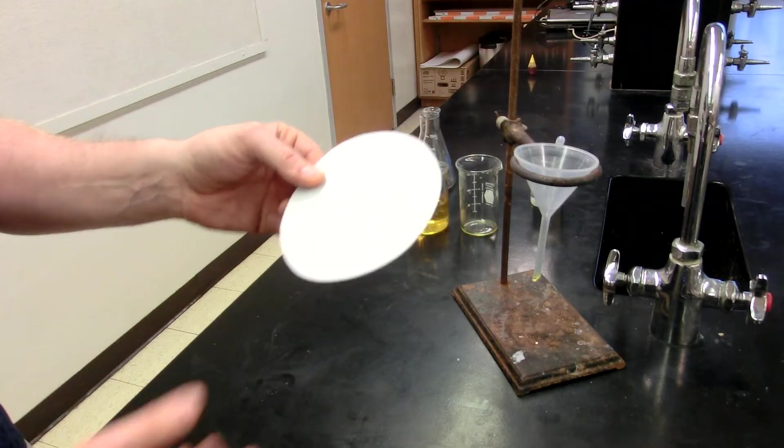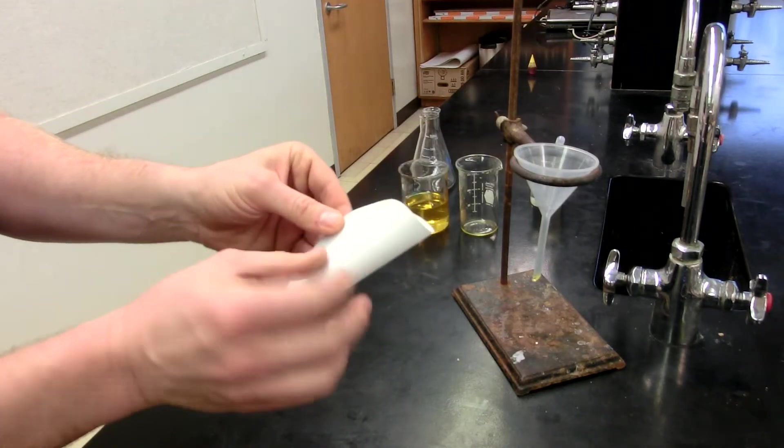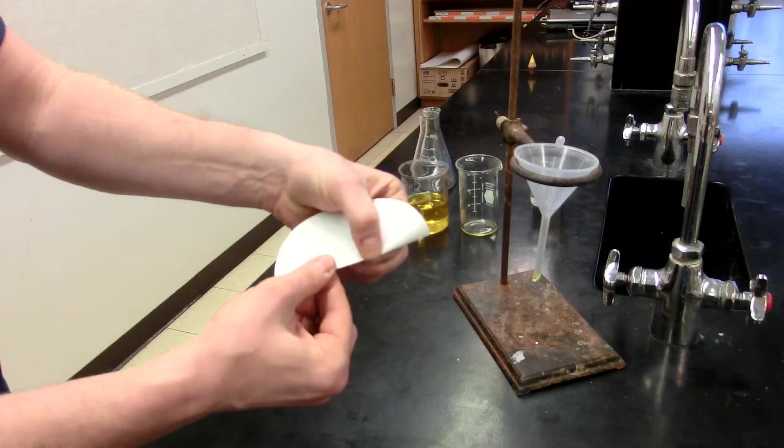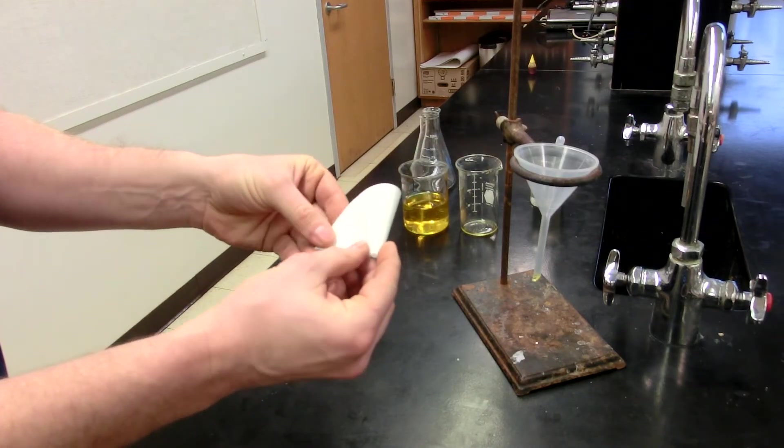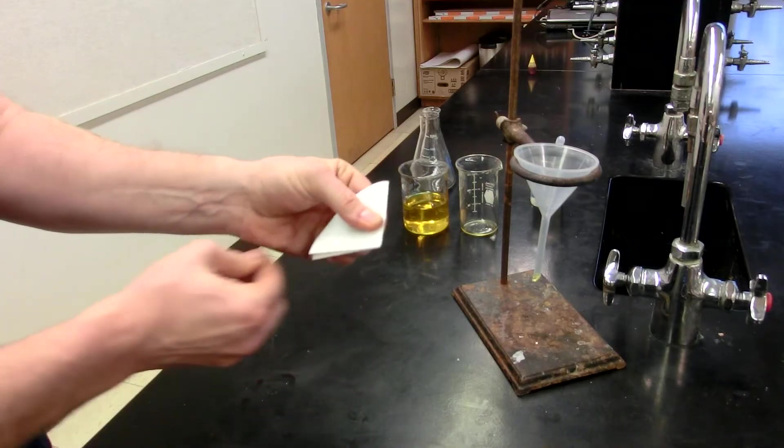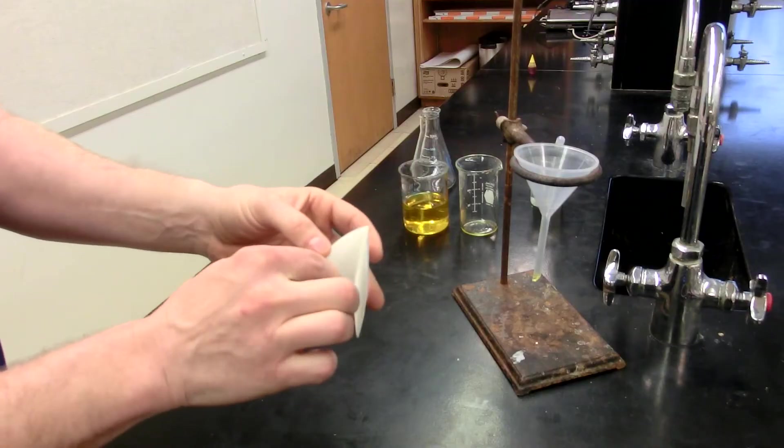This one should fit that funnel nicely. We're going to fold the filter paper in half. Then we're going to fold the filter paper in half again. And now we're actually ready to put this into the funnel.